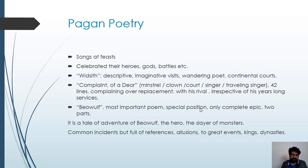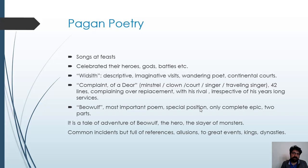We have another poem, the Complaint of Deor. Deor means a minstrel, a court singer, or a traveling singer. This poem contains the story of a traveling singer and his complaints and worries about his life. The poem consists of 42 lines. The singer, or Deor, is complaining about his replacement — he says that when he was absent from the king's court, the king replaced him with his rival or enemy. He laments that despite serving for so many years, his place was given to his enemy.